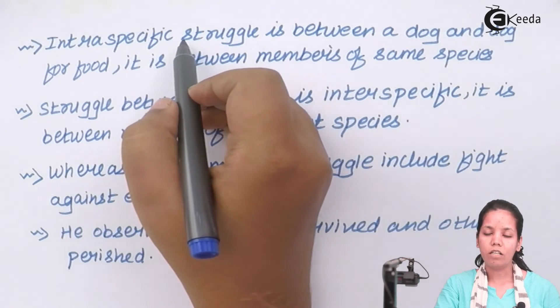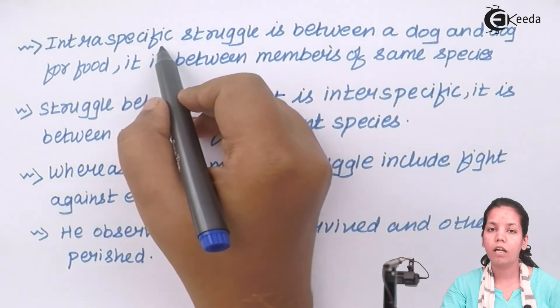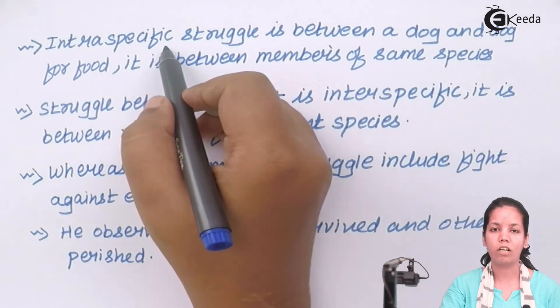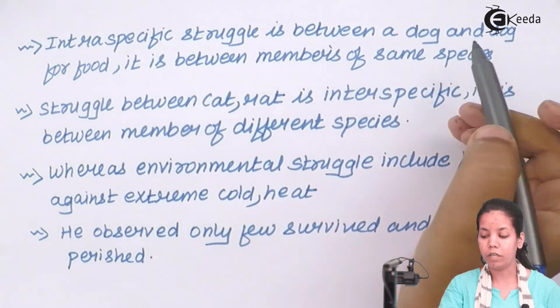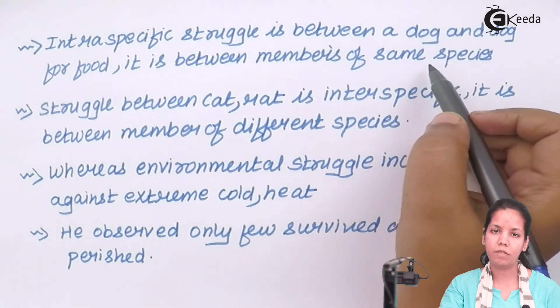We all have studied that struggles could be of three different kinds. The first one is intraspecific. Now example of intraspecific struggle could be a fight between two different dogs for food. Now it is a fight between members of same species, dog and dog.